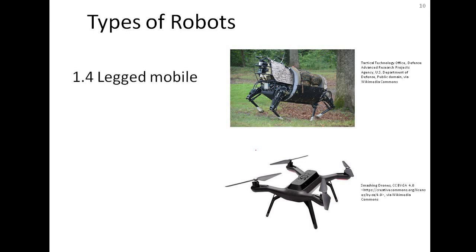Other types of mobile robots include legged mobile robots, which are particularly useful for rough terrain where the ground is not flat — a very realistic real-world scenario, as outdoor areas are often not smooth. Legs are perfect for this kind of locomotion.